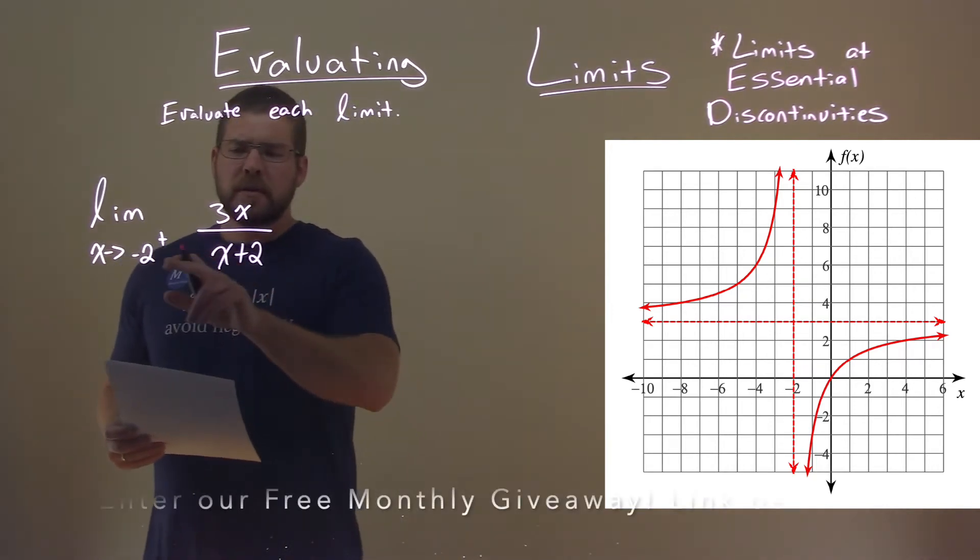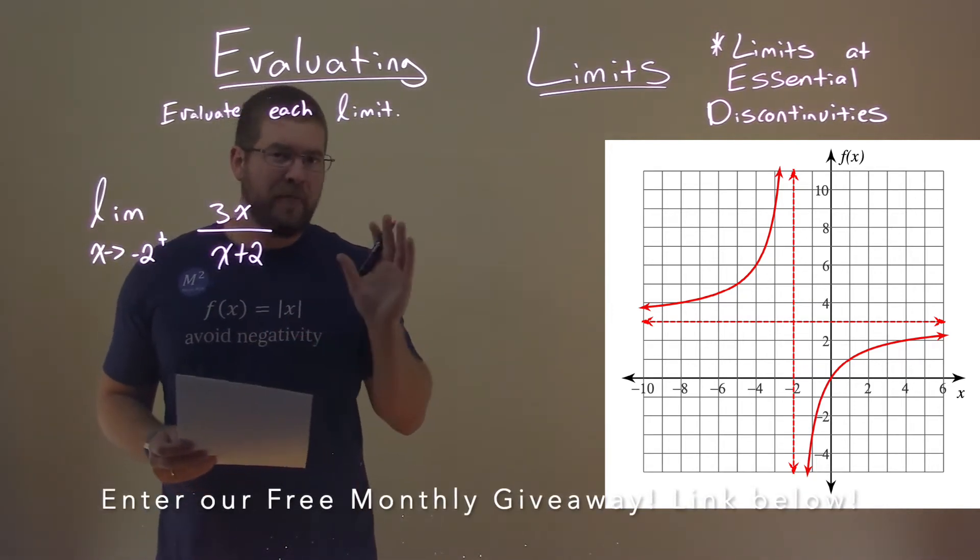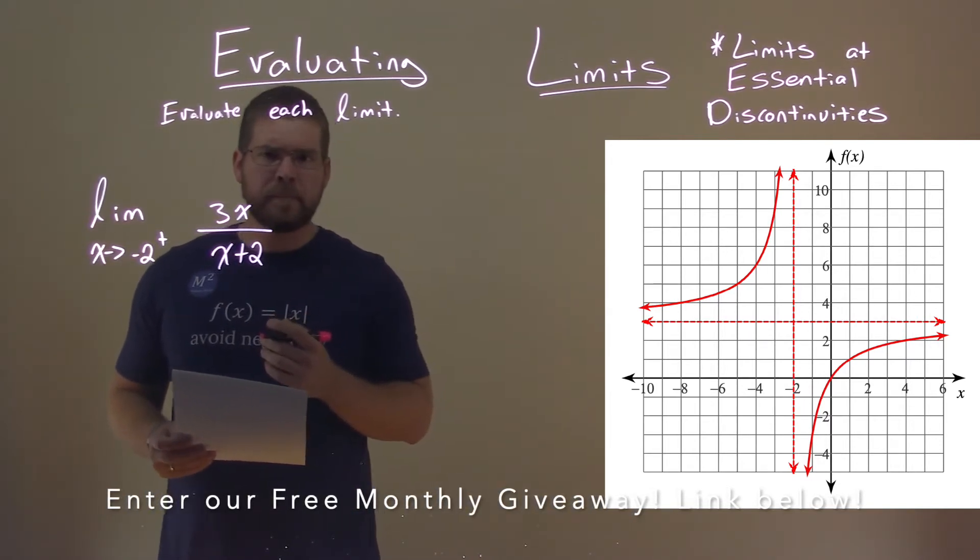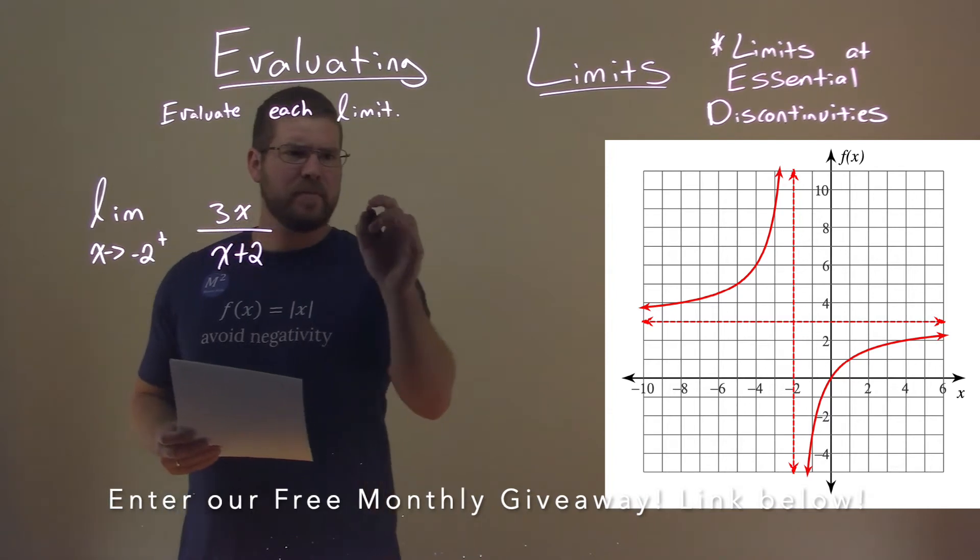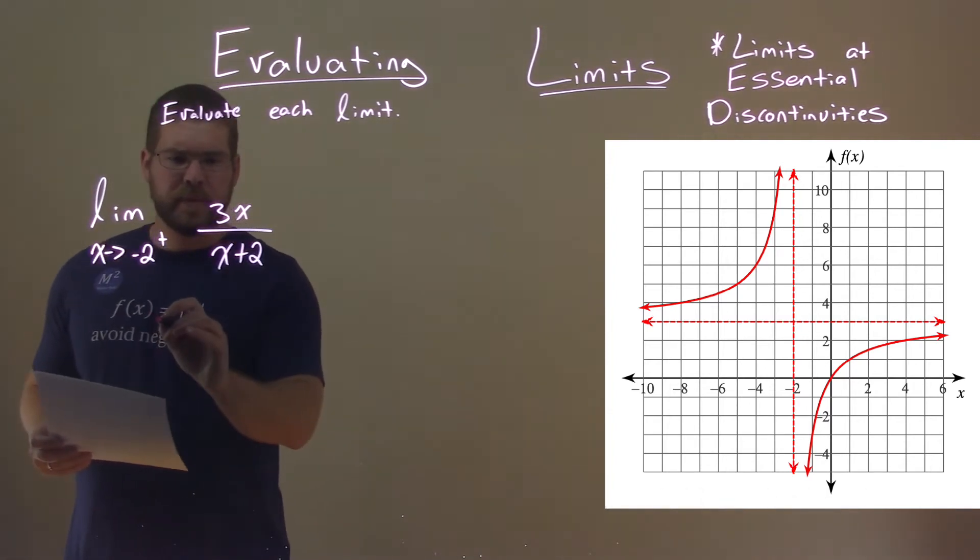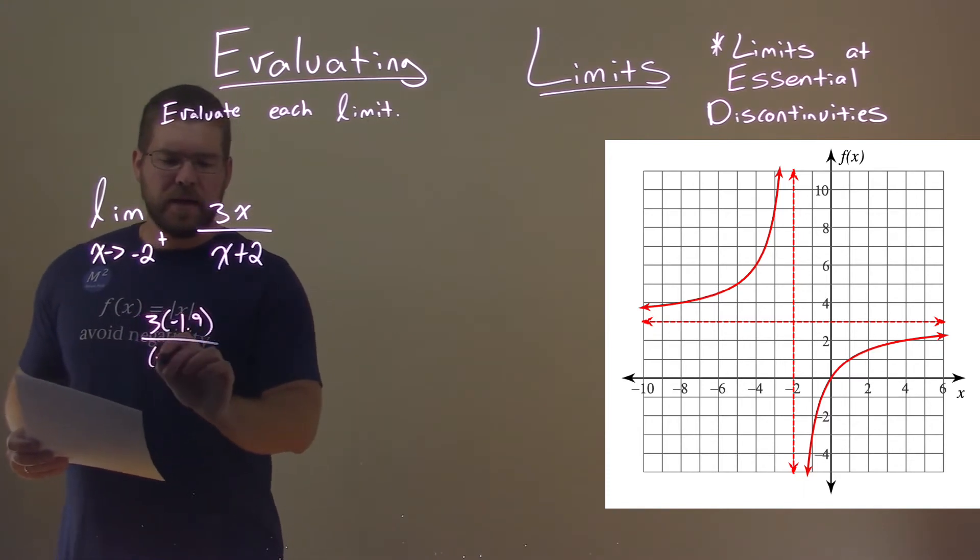Well, if we approach negative 2 from the right, a value just to the right of that would be negative 1.9. So what happens if we take 3x and x plus 2 and put in negative 1.9? So 3 times negative 1.9 over negative 1.9 plus 2.